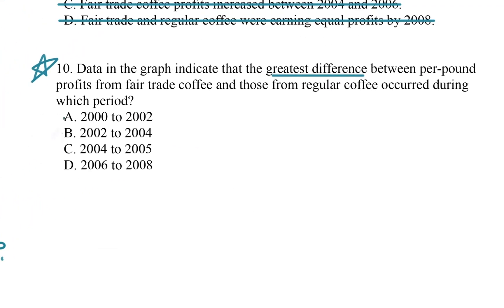Choice A is 2000 to 2002. Choice B is 2002 to 2004 — there we go. The other choices are 2004 to 2006 and 2006 to 2008. So the answer is B. All I did was the same strategy: I identified the precise thing we're looking for in the question stem — the greatest difference between per pound profits — then went back to the graph and pulled that interpretation out.